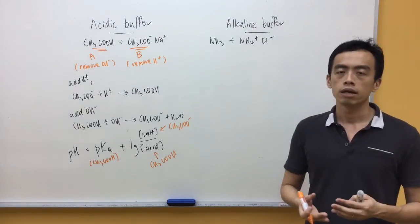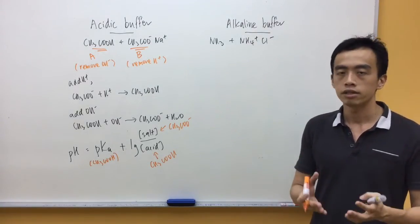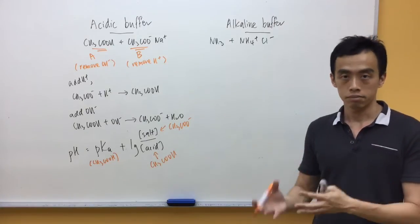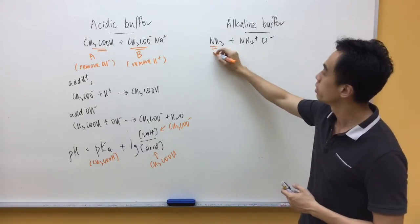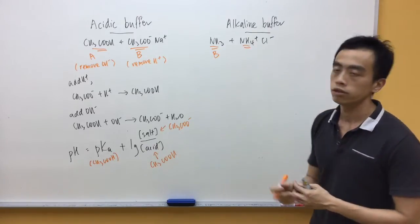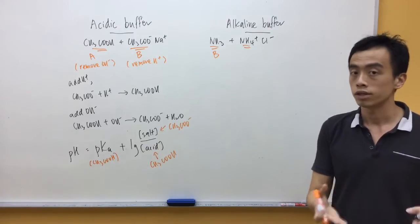Now again, if you look at the alkaline buffer, the idea is the same. Inside this buffer, there's an acid and there's a base. Ammonia will function as the base. And this NH4+ is its conjugate acid will function as the acid.